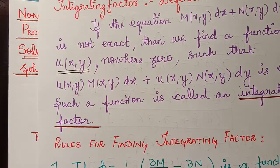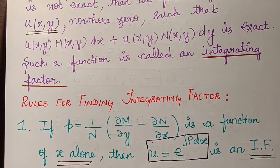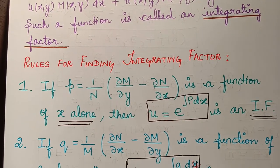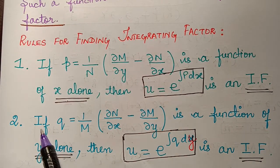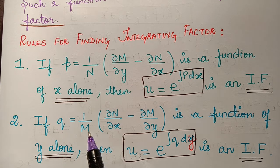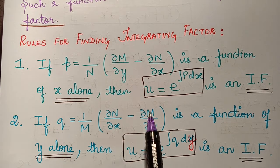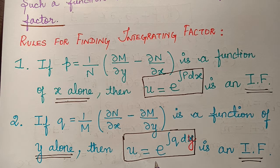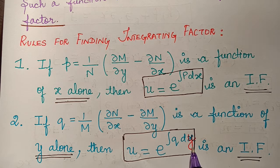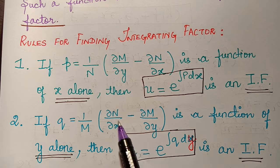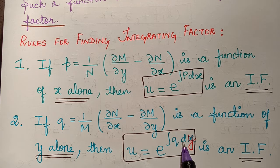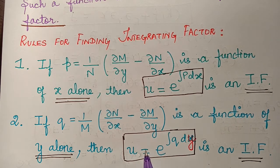We will use rule 2 to find the integrating factor, as learned in our previous video. If q equals (1/M)(∂N/∂x minus ∂M/∂y) is a function of y alone, then the integrating factor is given by u equals e raised to the power of the integral of q dy.